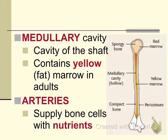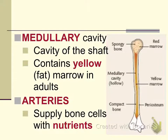The space within the diaphysis called the medullary cavity is not empty — it is filled with yellow marrow. One of the functions of bone is storage, and one of those stored materials is fat in the form of yellow marrow. There are also numerous arteries and blood vessels in the bone that provide nutrients to it.